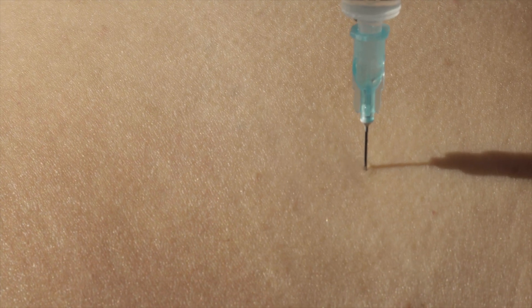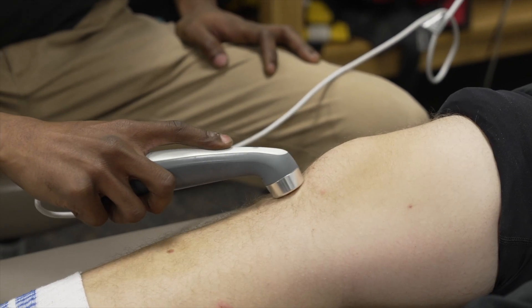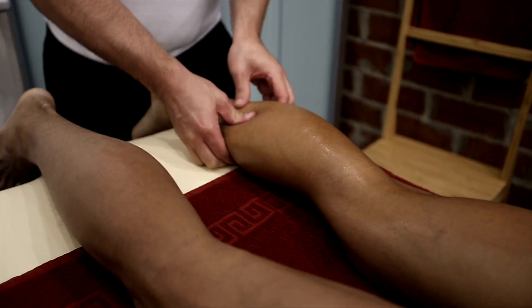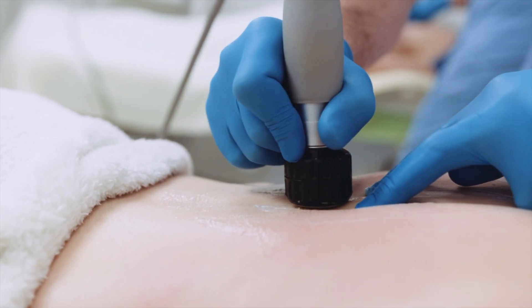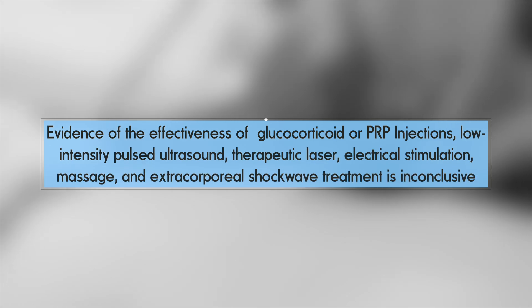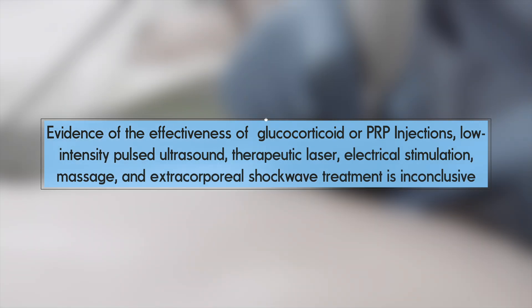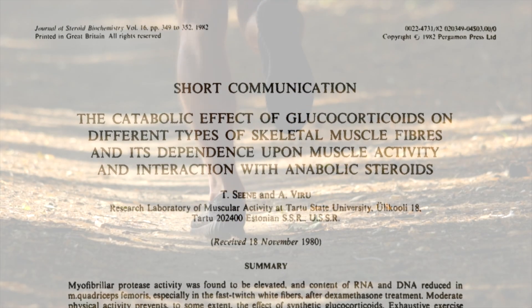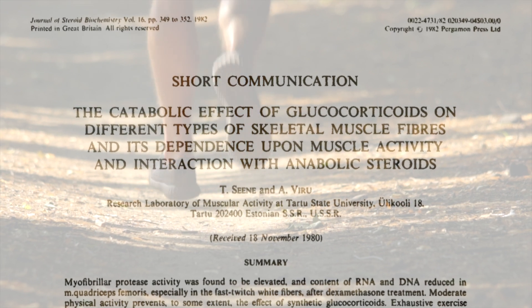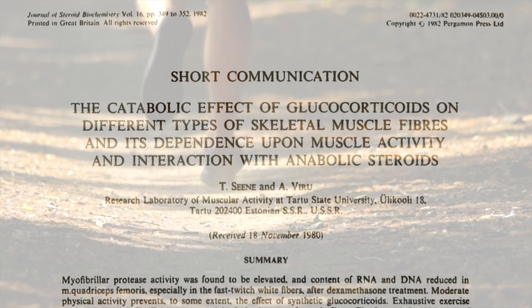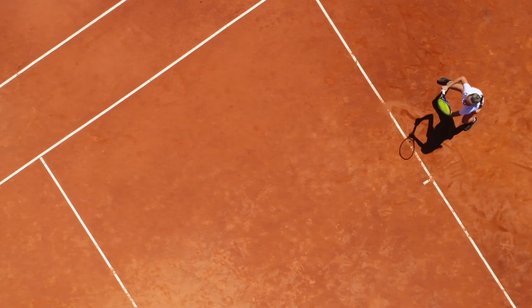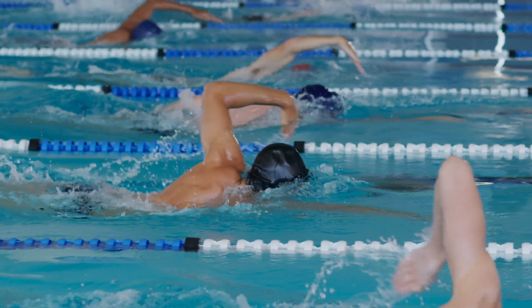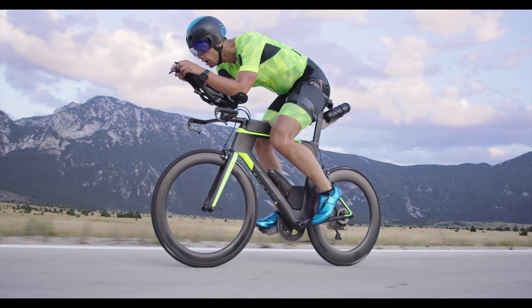There are also lots of other treatment modalities that are sometimes used, like glucocorticoid or platelet-rich plasma injections, low-intensity pulsed ultrasound, therapeutic laser, electrical stimulation, massage and extracorporeal shockwave therapy. In short, the evidence supporting their use is limited and conflicting. Glucocorticoid injections in particular are generally not recommended because of their potential catabolic effects on muscle and the absence of compelling evidence supporting their benefits, but exceptions might be made for elite or professional athletes in competition under the supervision of experienced sports medicine physicians.